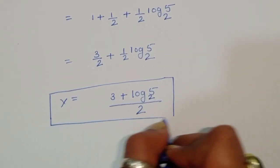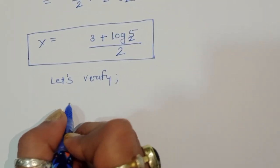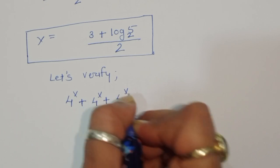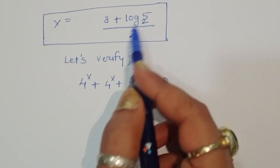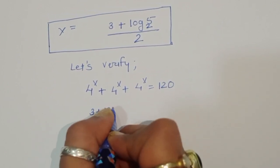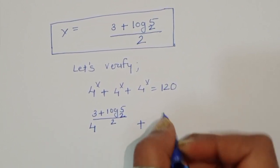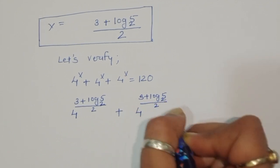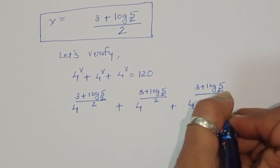Let's verify whether this is correct. The question is 4 power x plus 4 power x plus 4 power x equals 120. We substitute x equals 3 plus log base 2 of 5, divided by 2. So we evaluate 4 to the power of that expression three times and check if it equals 120.